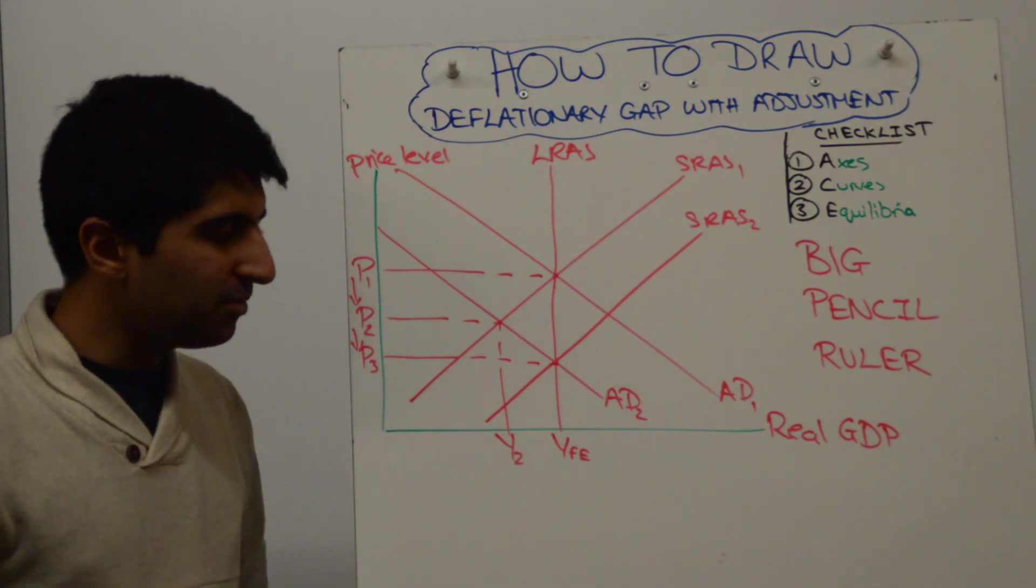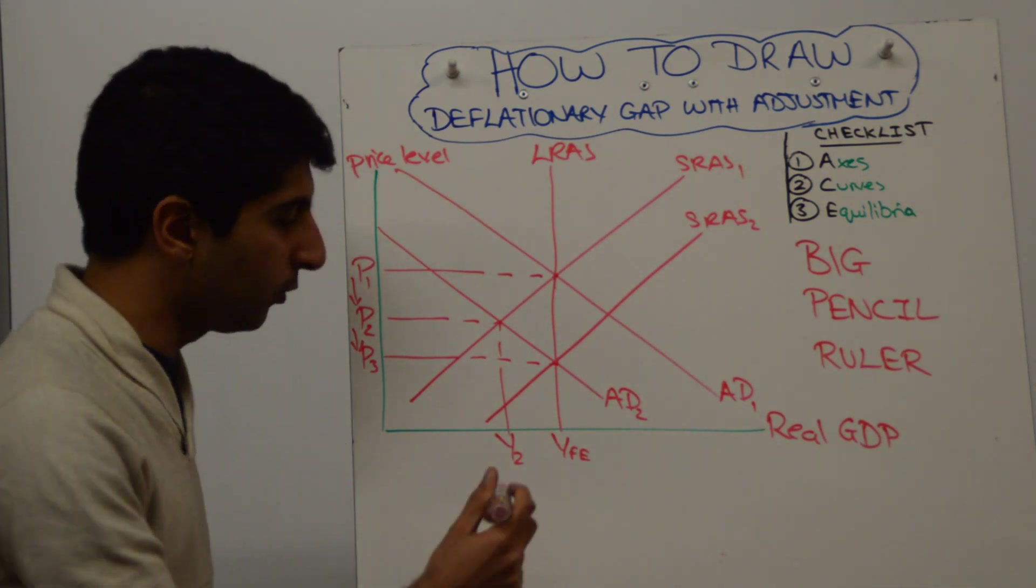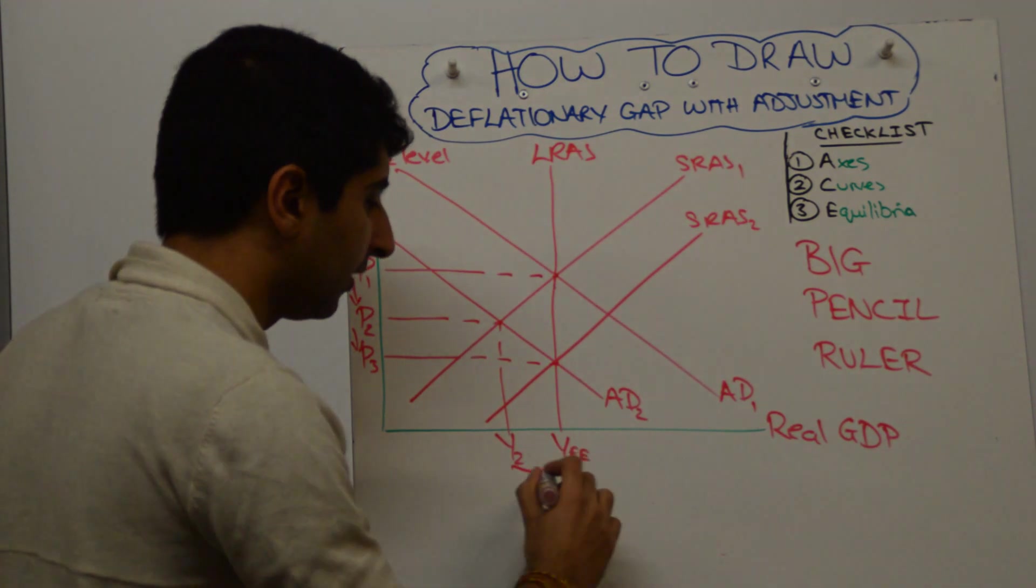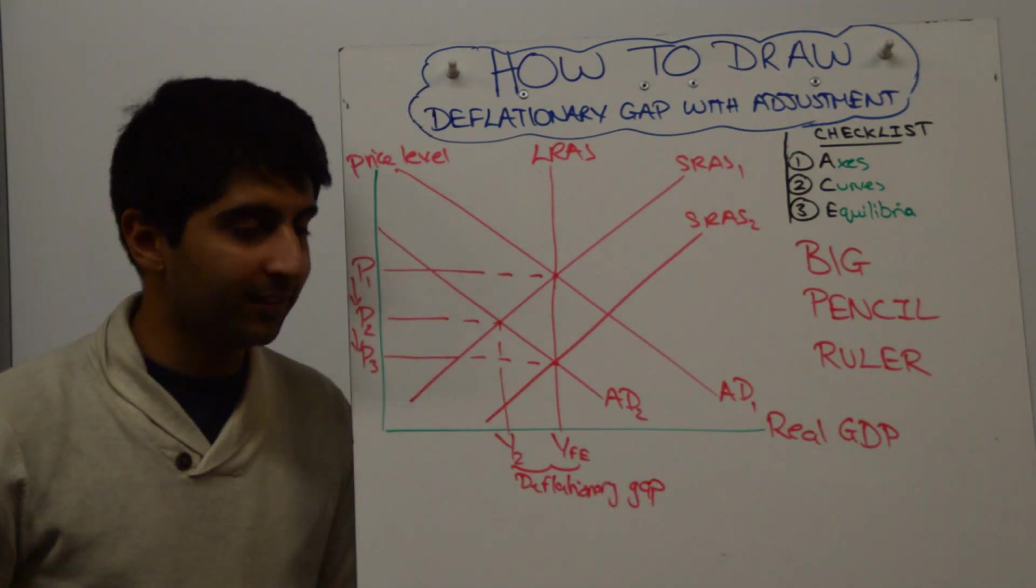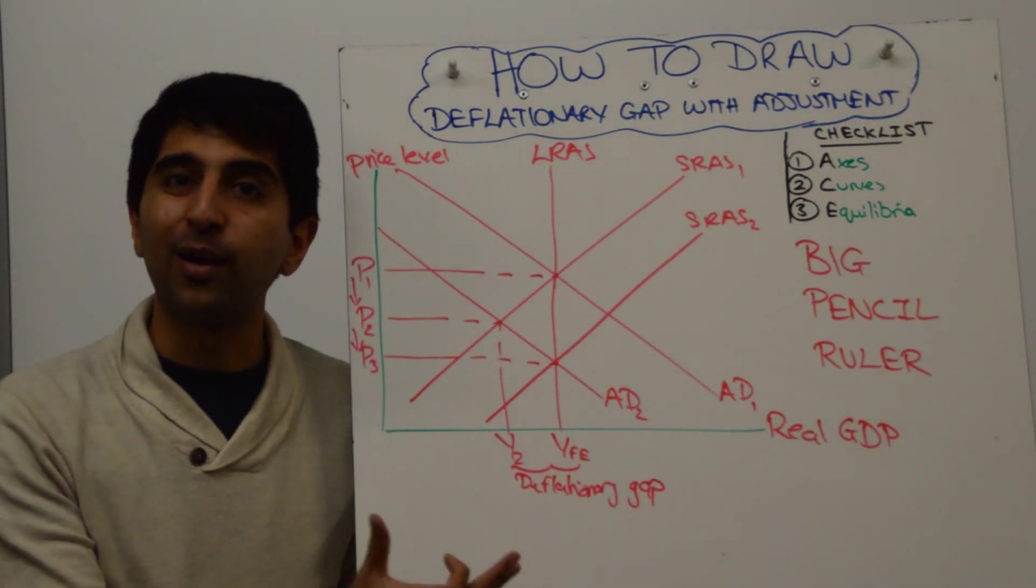One extra thing you might want to show, not necessary, but you might want to do it, is when you get to Y2, you might want to label that as your deflationary gap. The reason why I don't want to do this is that when you write your analysis, you will then talk about it because you've labelled it on the diagram.